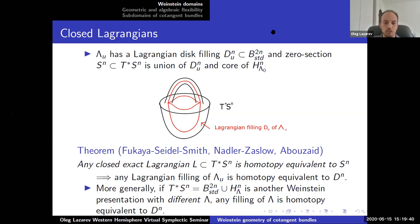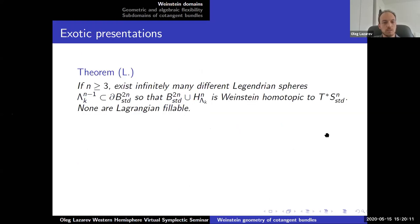There's a question: Thomas Kragh should also be cited — yes, that's a mistake on my slides. The result I'm referring to actually appears in a paper of Thomas Kragh's. Anyway, any hypothetical presentation — any filling has to be a disk. The first result I want to state is that in high dimensions there are actually certain exotic presentations for T*S^n: if n is at least 3 (real dimension 6), there exist infinitely many different Legendrian spheres in the boundary of the standard ball such that when you attach a handle you get something homotopic to the standard cotangent bundle with the standard Weinstein structure. Furthermore, none of these Legendrians are Lagrangian fillable.